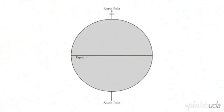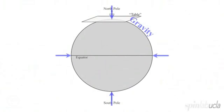Now let's do a thought experiment to try to understand how Coriolis varies as a function of latitude over a planet. Let's put a table similar to the one we were just rolling ball bearings across — a big version of it right at the North Pole. The rotation axis is going straight through the center of the table and it's perpendicular to the table. So when I roll a ball down the ramp, it's going to get deflected off to the right by the Coriolis effect.